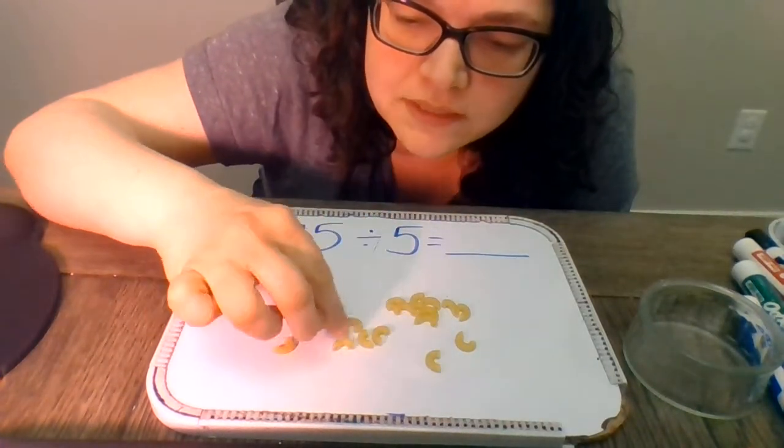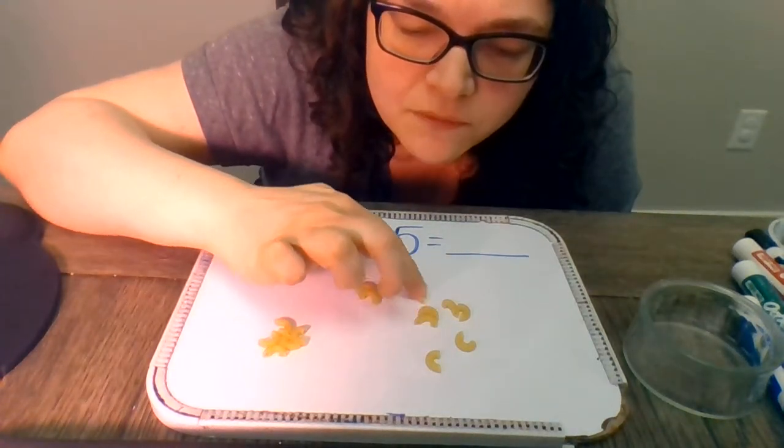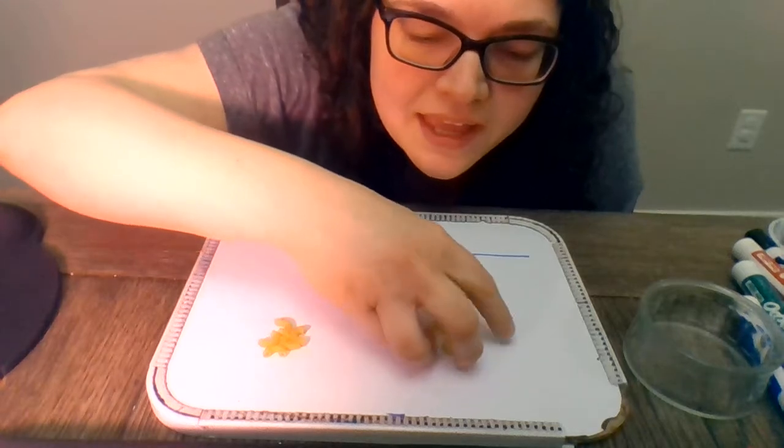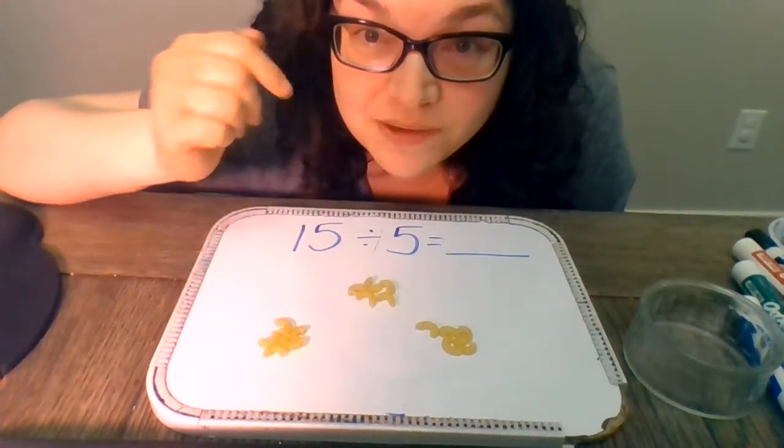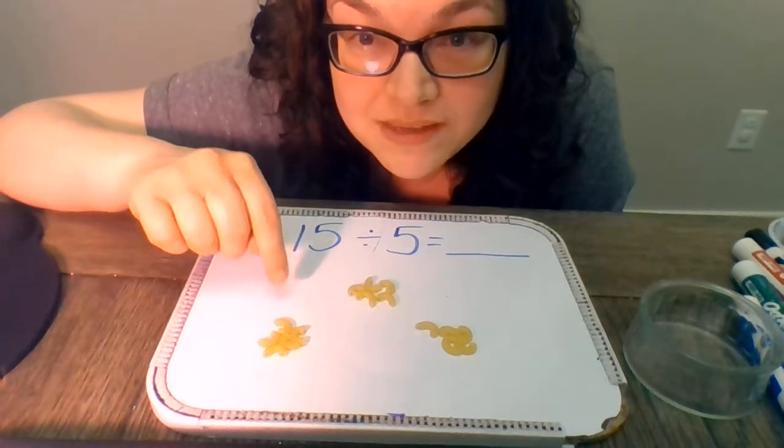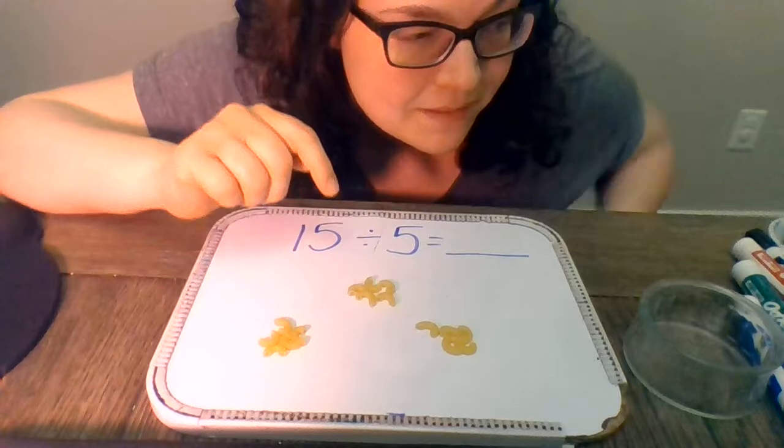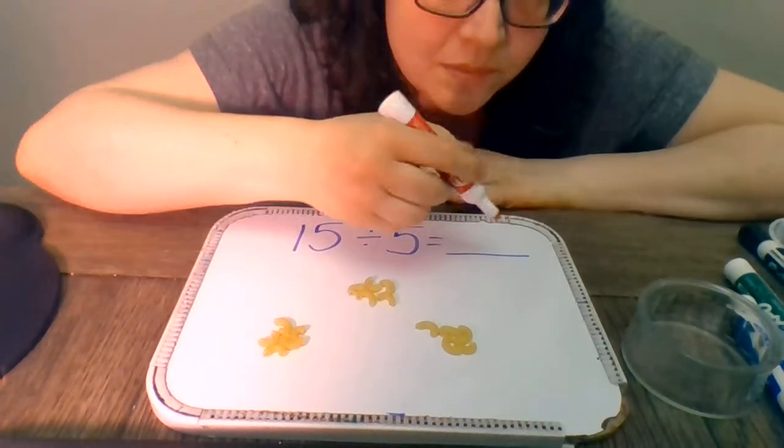So 1, 2, 3, 4, 5 over there. 1, 2, 3, 4, 5 right here. And 1, 2, 3, 4, 5 sitting in this little pile. So I think you can easily see without even having to count that we have made three piles. So that means the answer to 15 divided by 5 will be 3.